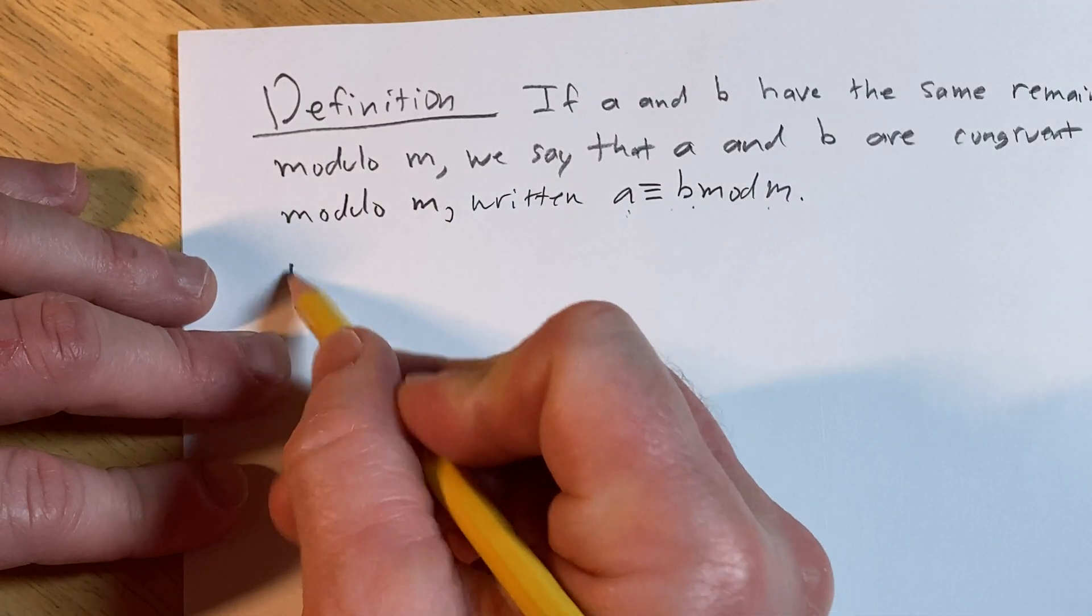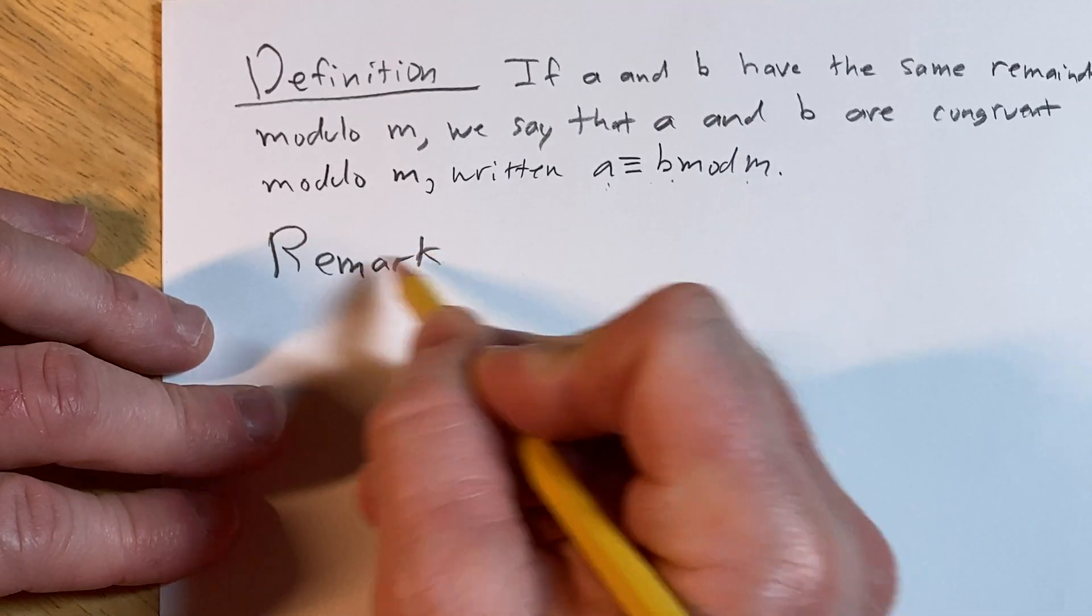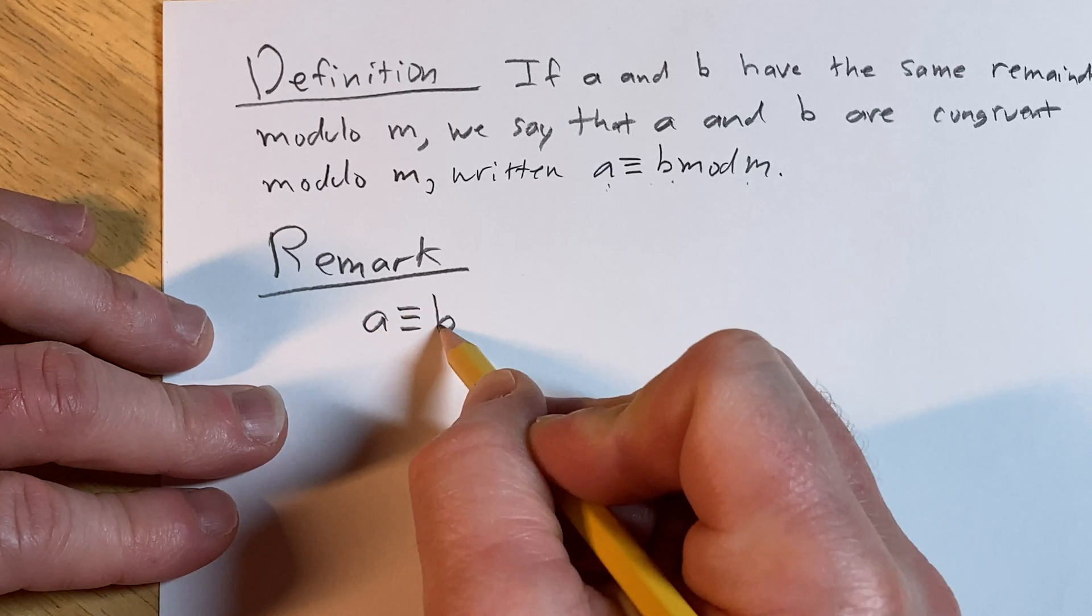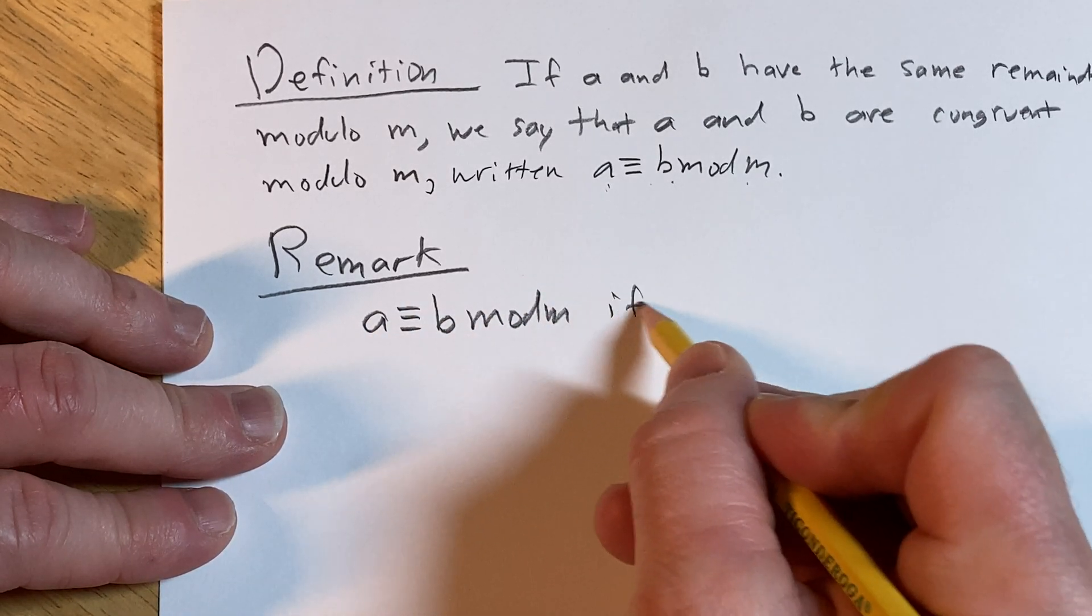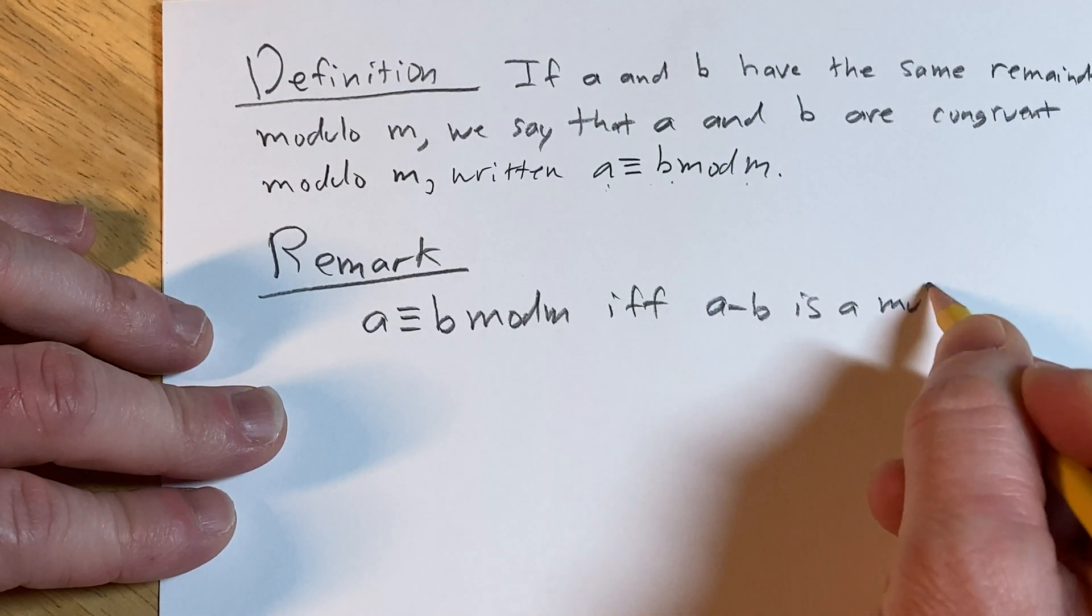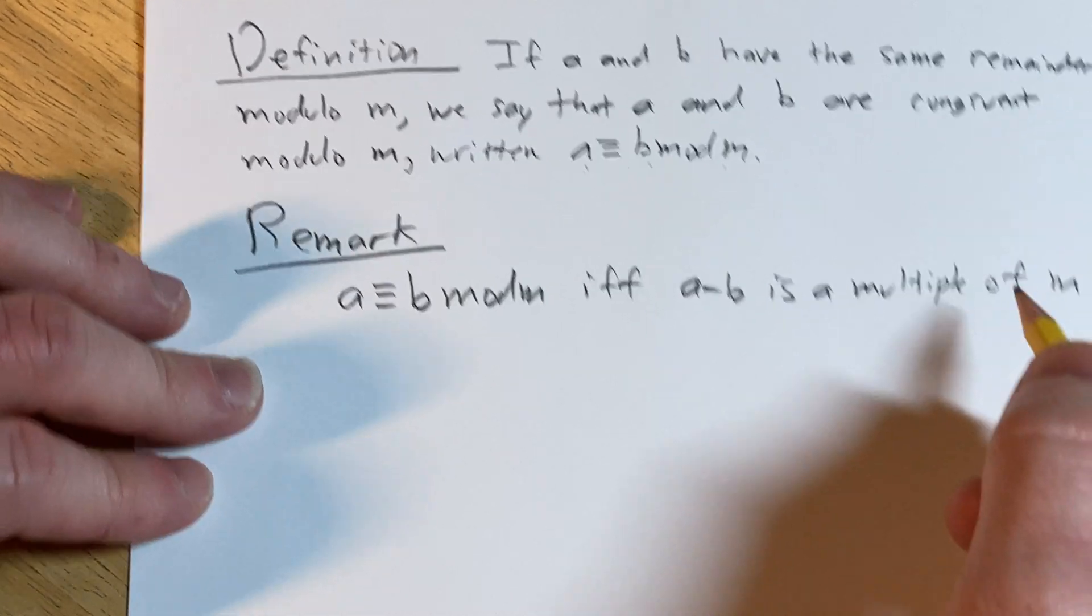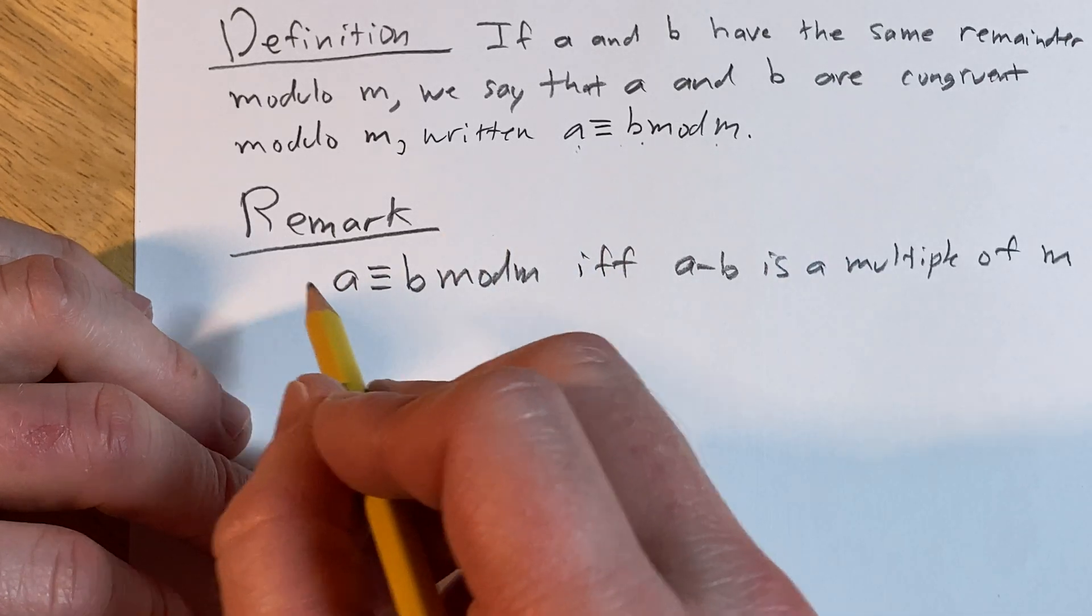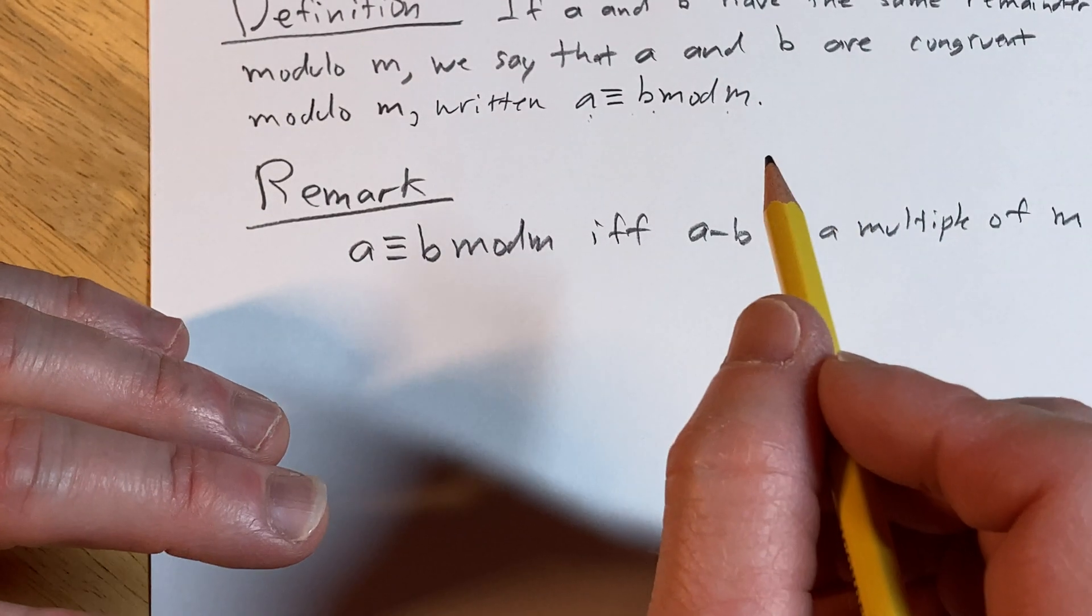A big, important remark regarding this definition - it's very powerful. a is congruent to b modulo m if and only if a minus b is a multiple of m. That's very convenient for proof writing. This is a super key remark.